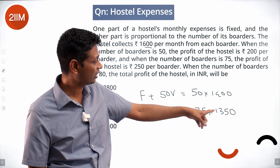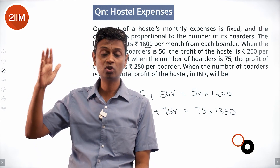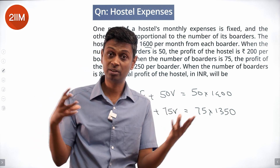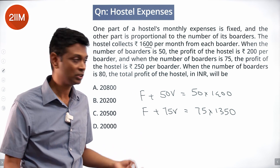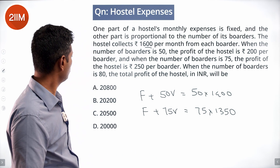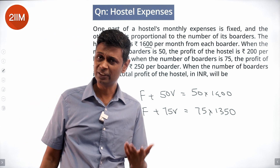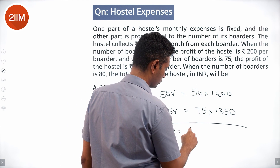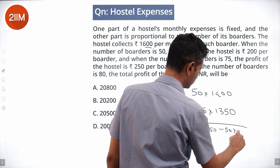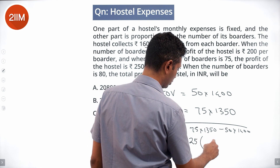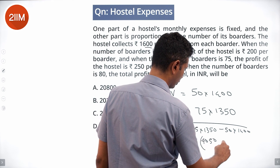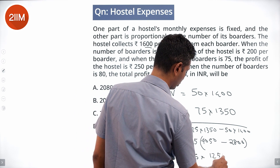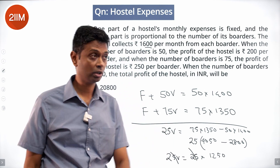The profit per boarder is higher with 75 boarders because the fixed cost F is distributed over more people. Subtracting the two equations: 25V = 101,250 − 70,000 = 31,250... actually working through: 25V = 75×1350 − 50×1400 = 101,250 − 70,000 = 31,250, so V = 1250. The variable cost per boarder is 1250.